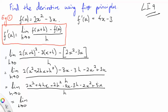Minus 3x and 3x, they cancel out. 2x² and negative 2x², they cancel out. Anything else cancel out? Nope. We're left with 4hx plus 2h² minus 3h all over h.